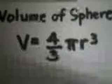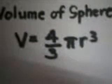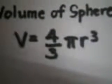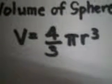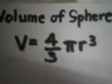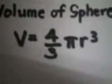A ball has the shape of a sphere. For us to get the volume of this object, let us choose the formula. Volume of the sphere: V is equal to 4 thirds pi r cubed, wherein r is the radius.